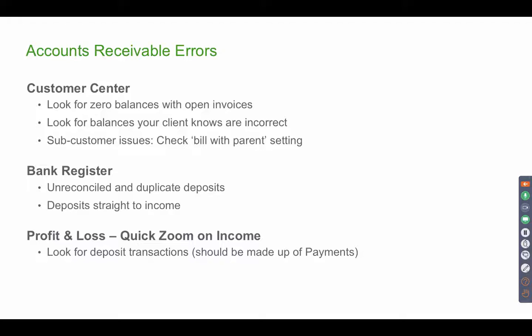You can also go to the register and look for deposits that haven't been reconciled or that look like duplicates — those are probably causing a doubling of your income. Take a look at deposits that went straight into income: go through your Profit and Loss, click on income, and see if any deposits are hitting that income account. Only invoices should be affecting income — not deposits.